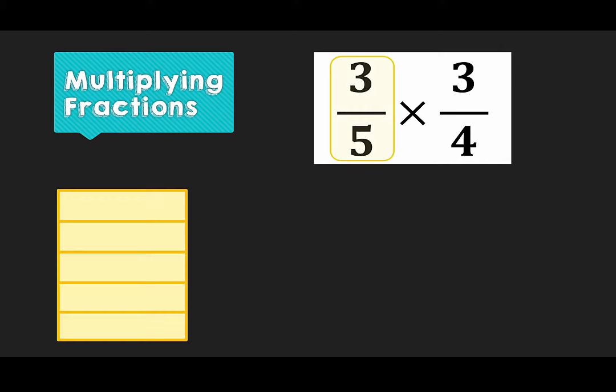Again, we will start with our first fraction, 3 fifths. Here, our rectangle is already divided into fifths, and our numerator tells us that we have 3 of these parts.